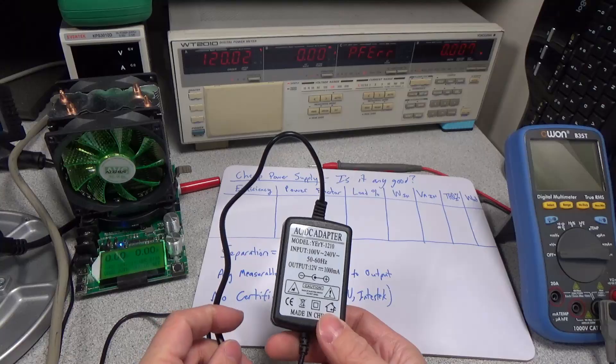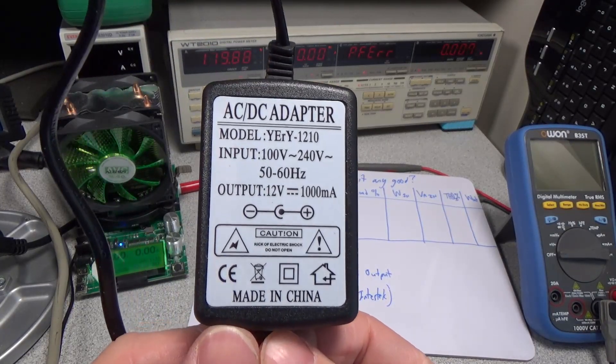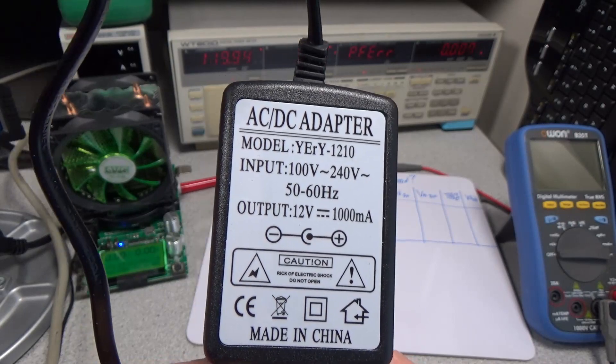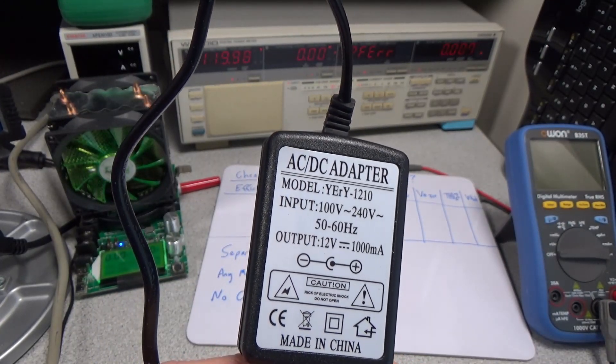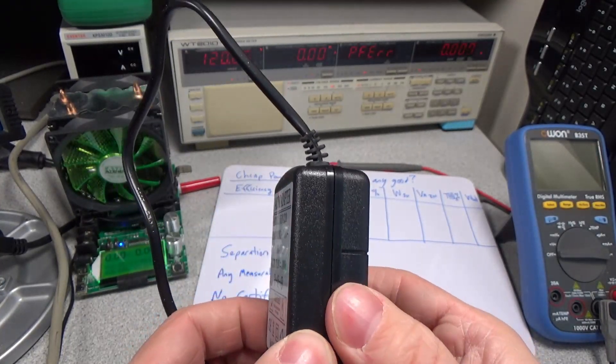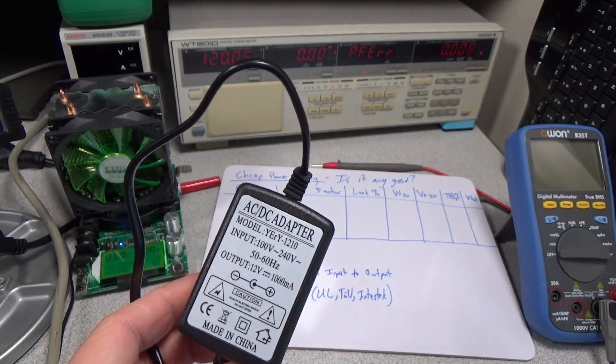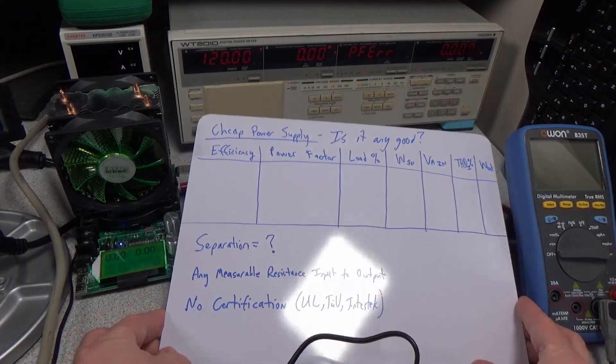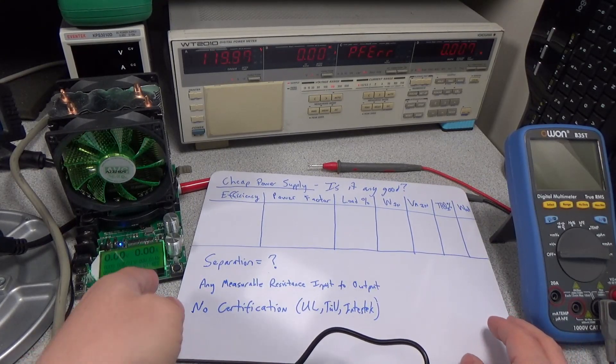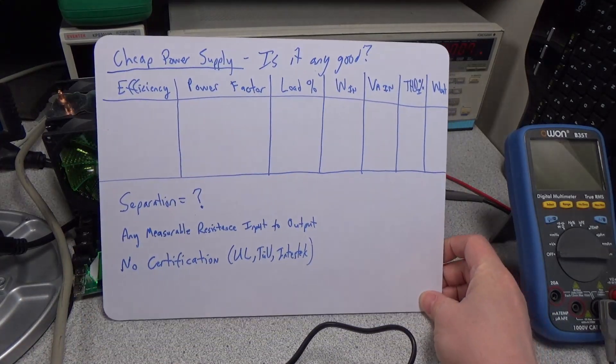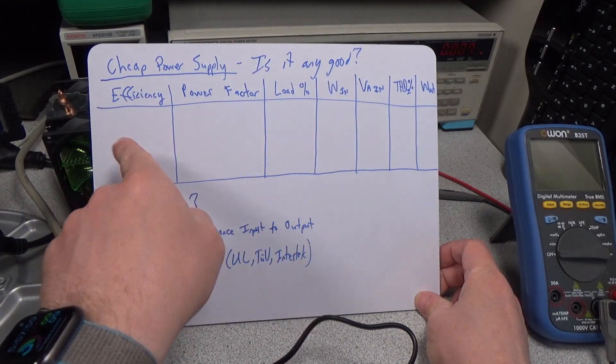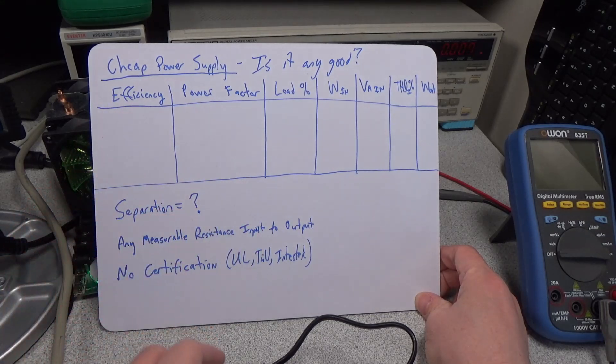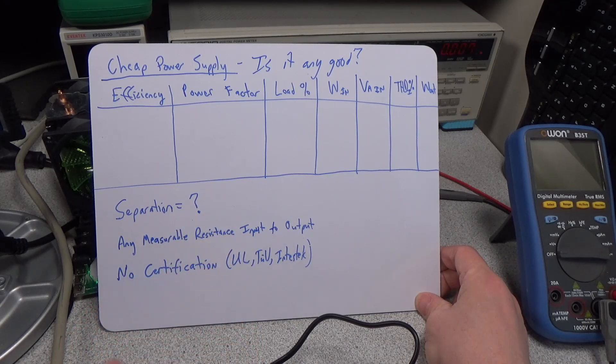So today we're going to be looking at this cheapest chips power supply. Got a model number on there. You can see it's got a universal input voltage rating, doesn't have any official ratings or anything, no certifications. So we'll see how it does and we're going to crack it open and look at the isolation inside too and see if it's really any good or if it's just kind of half of what it should be. You know we want to see if it's any good. We want to take a look at its efficiency and basically the condition of the power. So we'll take a look at the harmonic distortion and the power factor as well as the efficiency. When we crack it open we'll look at the separation to see if it's safe or not.